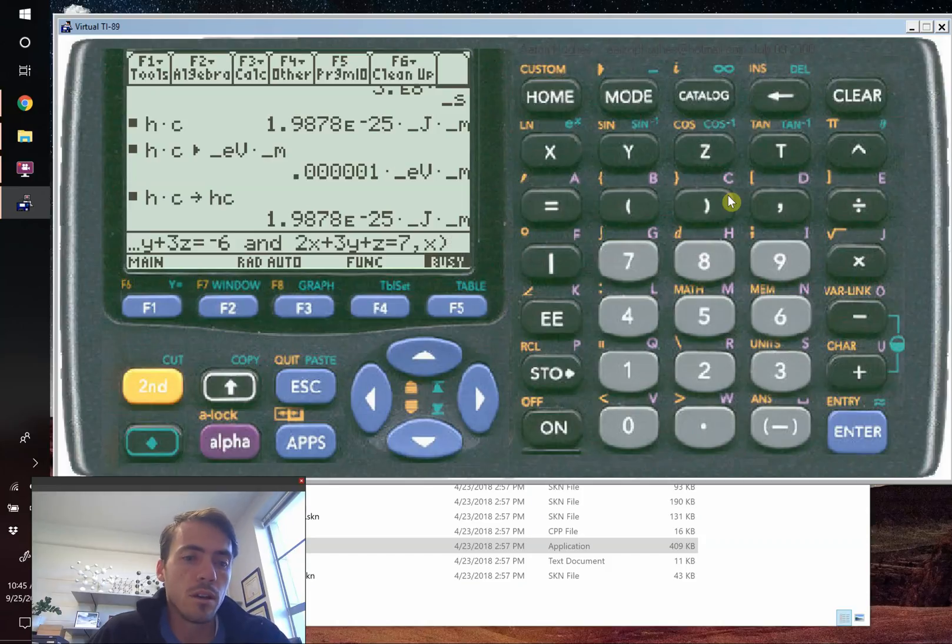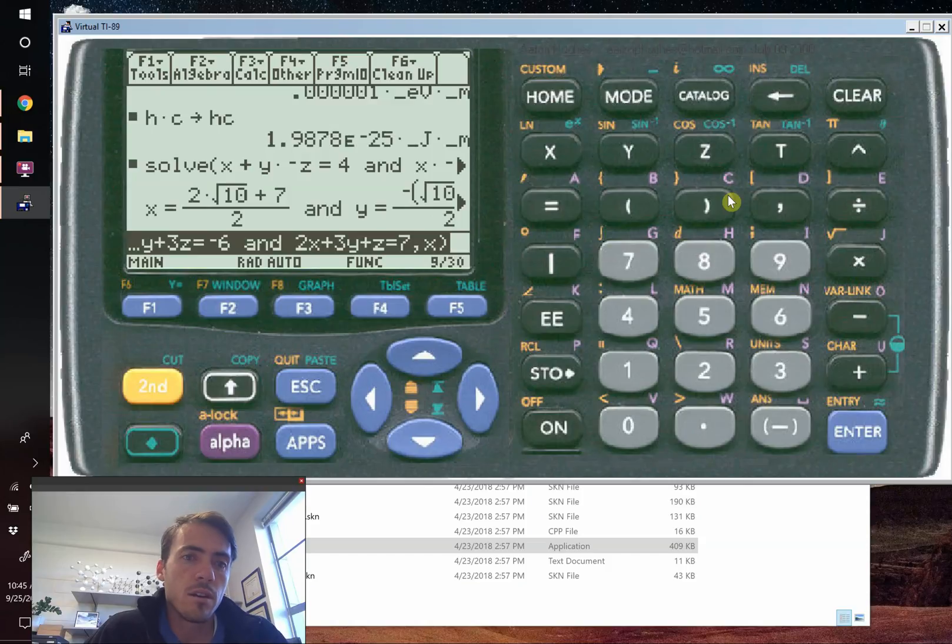You give it a minute. It does the algebra here, and it's going to spit out the answer. Now it's giving the answer in its full, non-reduced, simplified form. So this is the actual form.